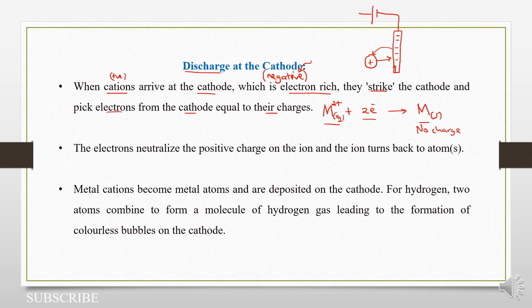So that's what we mean by discharged — electrons neutralize the positive charge on the ion and it turns back to an atom. So our M becomes an atom and it's no longer in solution. When metal cations become metal atoms, they are deposited on the cathode.